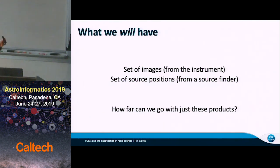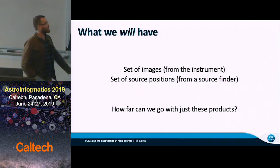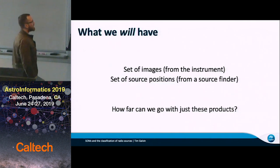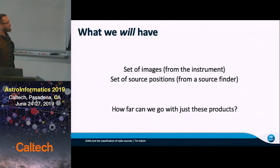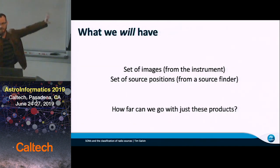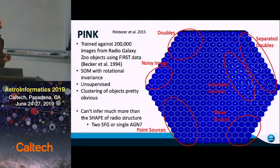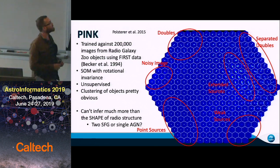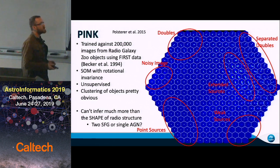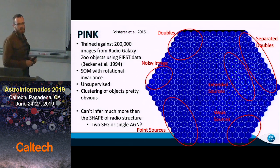I wanted to approach the problem from a pretty different direction. The starting position we are guaranteed to be at is: we'll have a set of images from these new instruments and a set of source positions, which we can get from a source finder like Aegean, PyBDSF, or similar. I really wanted to see how far we could go towards answering the problem I've described with just images and positions. And really the answer is all about the tool you choose. If you've been to astroinformatics in the past, you've probably heard of PINK. PINK is a piece of software that implements the self-organizing map algorithm with respect to image data, and importantly it implements rotational invariance in how it goes about doing it.